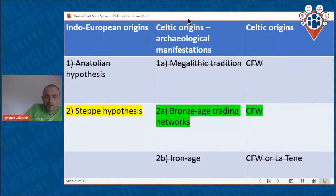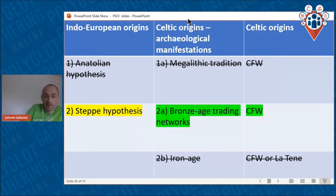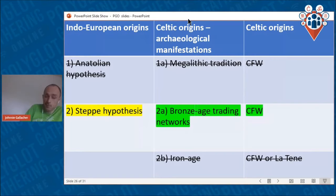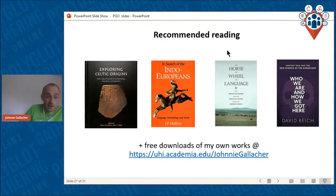Wrapping up: I believe the archaeological manifestation of the earliest Celtic speakers is in the early Bronze Age. I prefer the Celtic from the West interpretation rather than the traditional Central European Hallstatt model. I agree the steppe hypothesis is best for understanding the spread of Indo-European languages, but perhaps not the origin — Indo-European may have originated elsewhere, for example potentially in Armenia, before it got to the steppe, so I think it's half correct. Here are some foundational literature recommendations, and I've put a link on screen where you can download my own works free of charge.